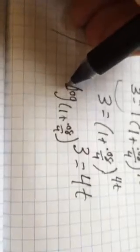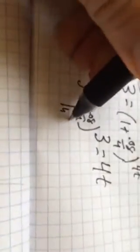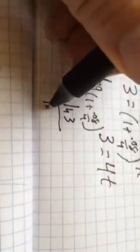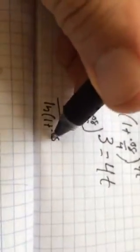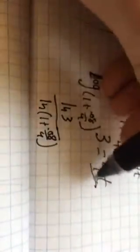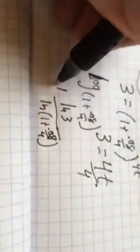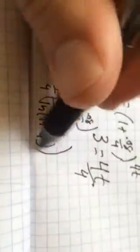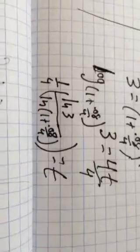I can figure out what this is. This is just a number as well by using a change of base formula. So, I could think of this as natural log of three over natural log of one plus 0.08 over four. And that equals 4t, divide both sides by four. In other words, multiply this by a fourth. And that will give me my time, my t in years.